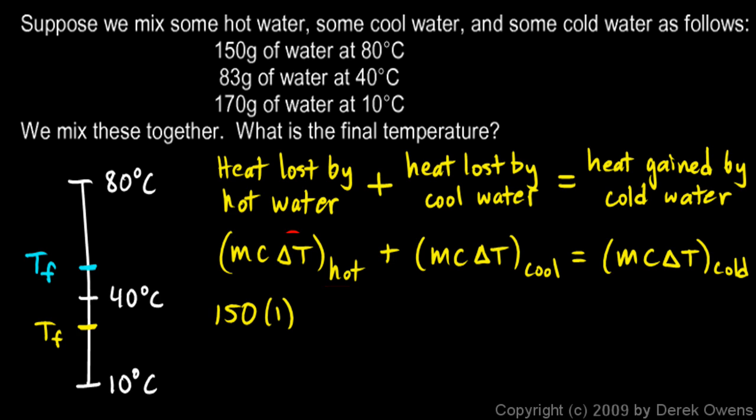Look over at the thermometer. I'm going to erase this because we're not using that. My final temperature, according to this equation, is below 40. The change in temperature for the hot water - the hot water starts at 80 and cools down to temperature Tf. So my change in temperature is 80 minus Tf. That's m times c times delta t for the hot water.